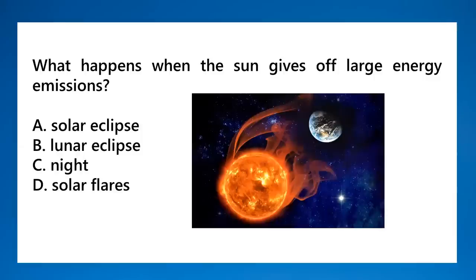What happens when the sun gives off large energy emissions? That produces solar flares. Solar flares produce solar wind, which interacts with Earth's magnetic field and is responsible for the auroras observable on Earth.